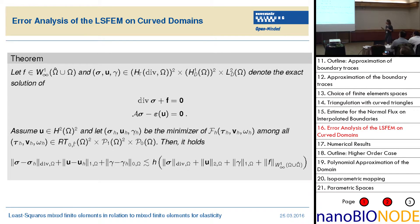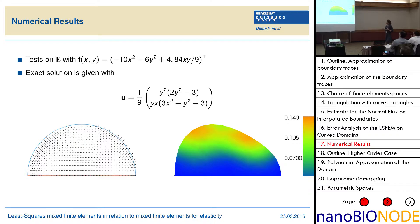It's just a matter of keeping track of the terms appearing in the least squares analysis. You get the result that, using the approximated boundary, you retain your convergence order when using linear elements.